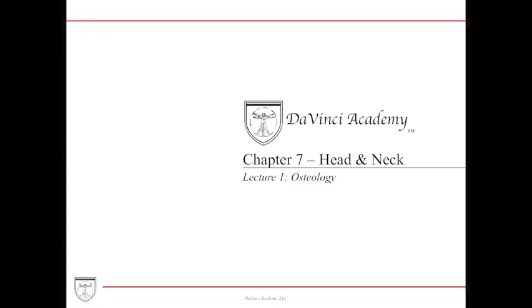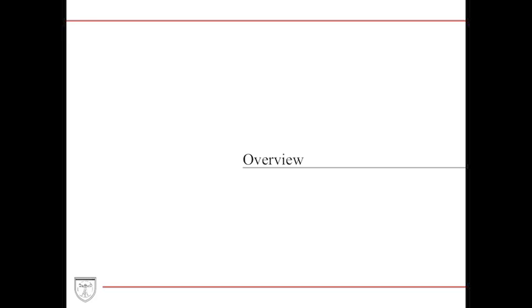Hello everybody. Welcome to Da Vinci Academy's chapter 7 unit of the head and neck. This is our very first lecture on osteology. Before we get started on this very large unit, we're going to briefly talk about it. For many students and teachers, they often talk about how this is the most difficult portion of anatomy — the most feared one. Everyone tends to shudder when this unit comes around. I think that's silly. Head and neck is probably the best unit of anatomy; it's very complicated, but that doesn't mean it's difficult.